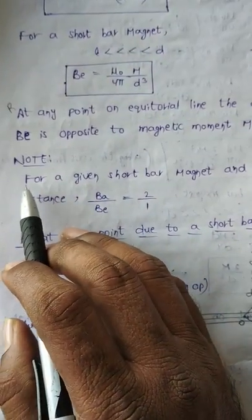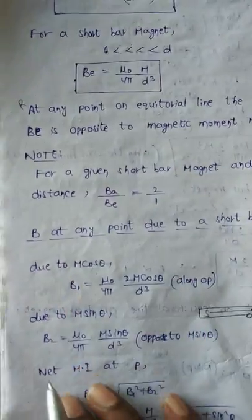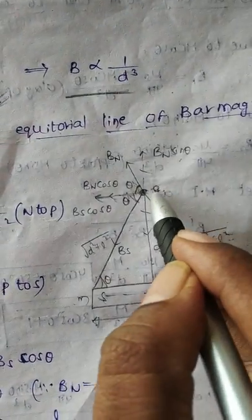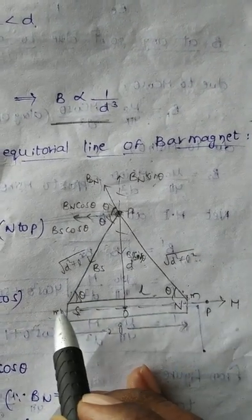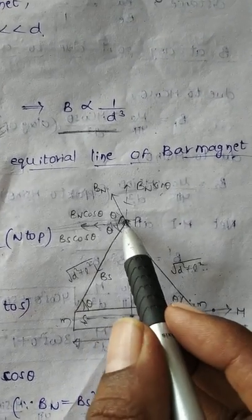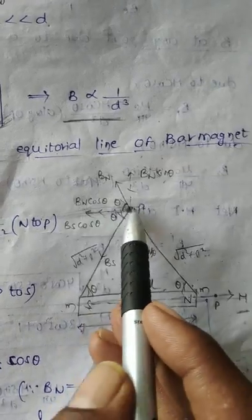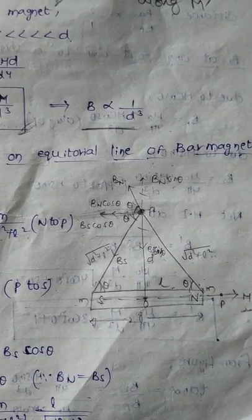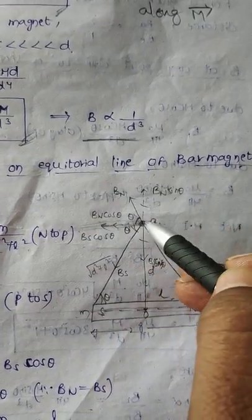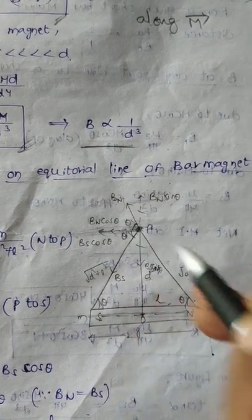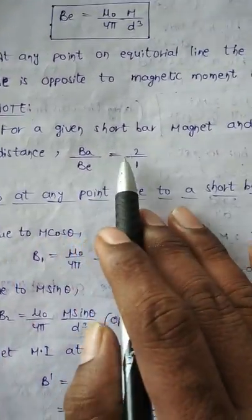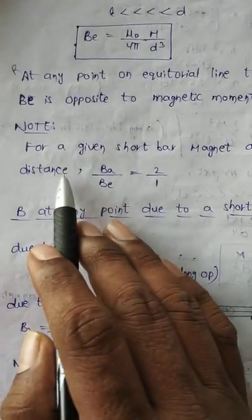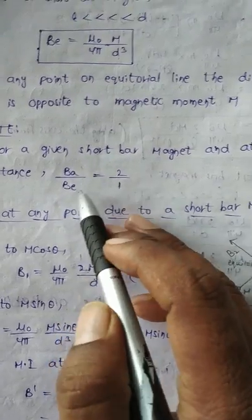The direction of B_E is very important. The magnetic moment is always taken from south to north along the axis. At the equatorial line, the net magnetic induction is opposite to the magnetic moment. This is a very important point: at any point on the equatorial line, the magnetic induction field is always opposite to the magnetic moment. For a given short bar magnet at the same distance, the ratio B_A to B_E is equal to 2 to 1.